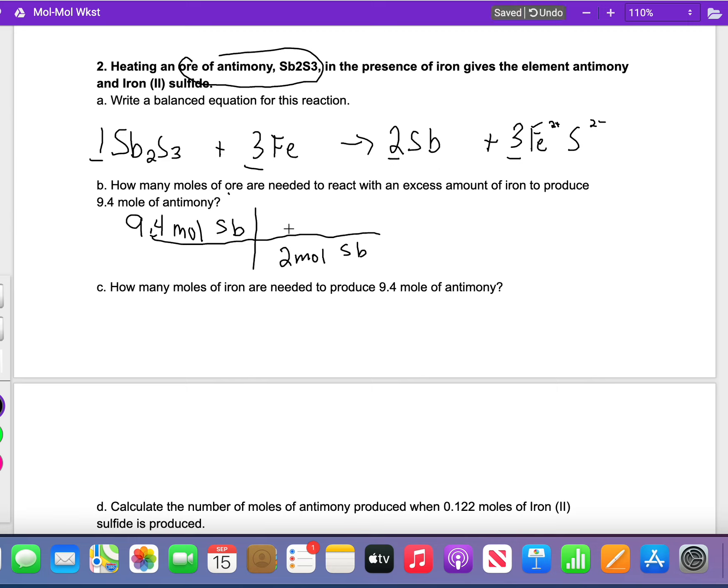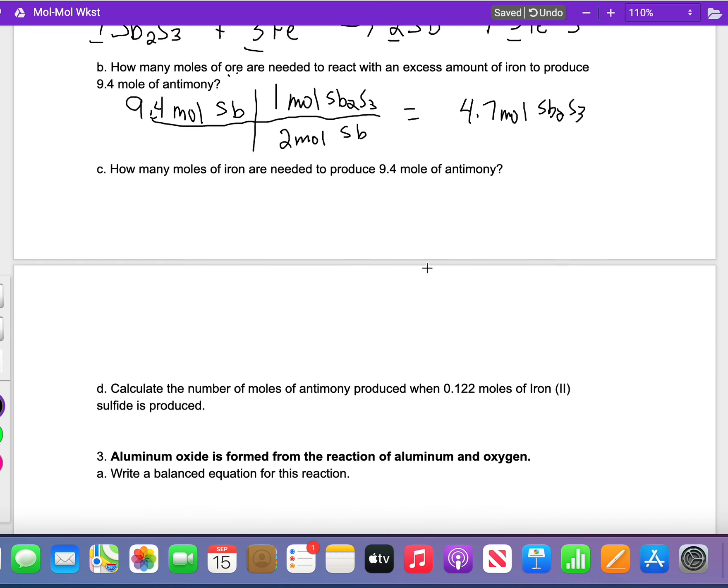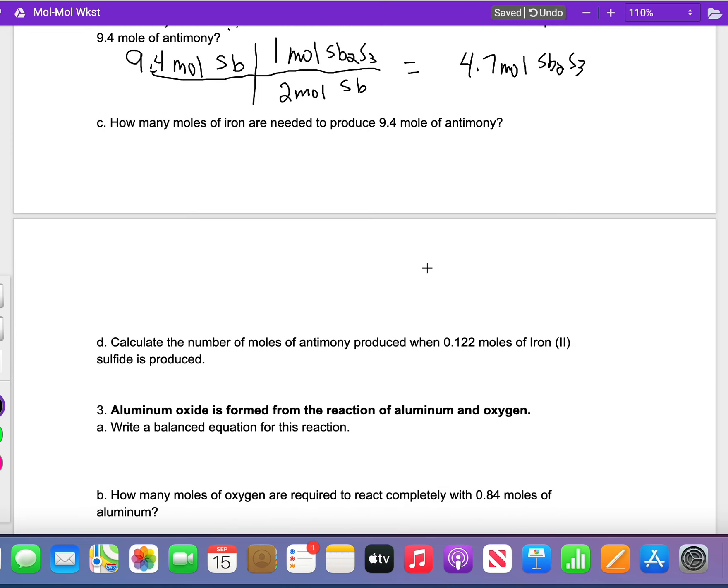What are we trying to go to? How many moles of ore? So that's the Sb2S3: 1 mole Sb2S3. Then you can do the math and it ends up being 4.7 moles Sb2S3. I think you can finish C and D there.